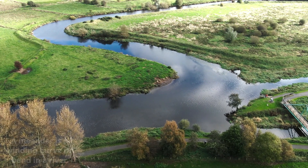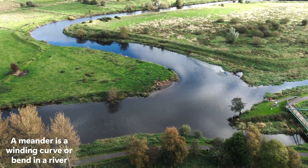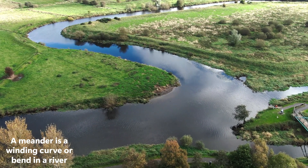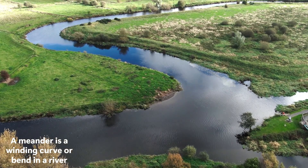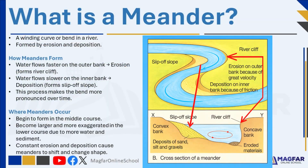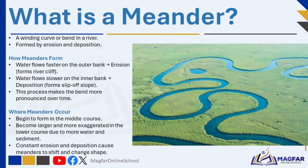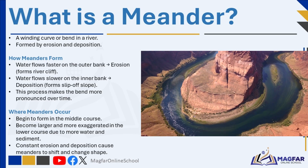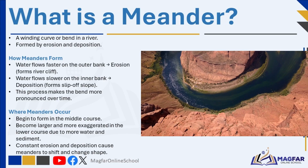A meander is a winding curve or bend in a river formed through both erosion and deposition. As the river flows around a bend, water moves faster on the outer bank causing erosion, while it flows more slowly on the inner bank, leading to deposition of sediment. Over time, this process makes the bends more pronounced. Meanders begin to develop in the middle course but become larger and more exaggerated in the lower course due to the river's increased volume and sediment load, causing the meanders to shift and change shape over time.